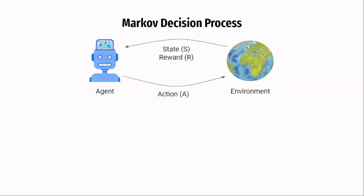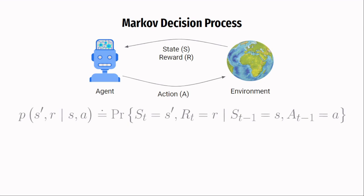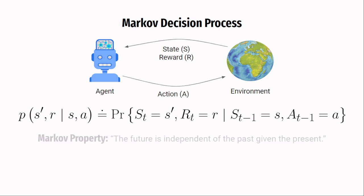In the last video, we talked about the agent-environment interaction extensively. This interaction has a fancy name called a Markov decision process. MDPs have well-defined probability distributions that are dependent only on the preceding state and action. The equation summarizes the dynamics of the MDP: what is the probability of seeing state S' and reward R given state S and action A. MDPs have a special property called the Markov property.